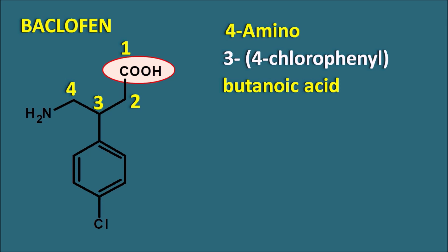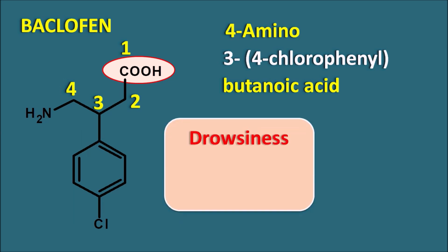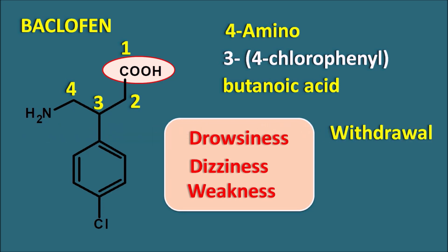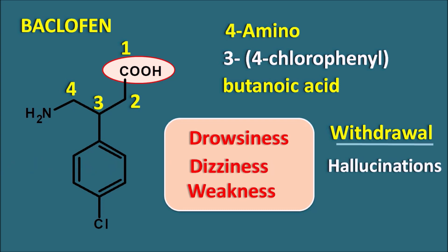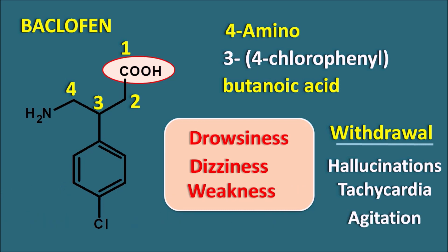Baclofen is used to treat spastic conditions and to control muscle pain in spinal cord injuries. Since it acts centrally, it produces central side effects like drowsiness, dizziness, and weakness. When this drug is withdrawn suddenly, it shows withdrawal effects — particularly psychotic symptoms like hallucinations — and it can also stimulate reflex mechanisms and the sympathetic system, producing tachycardia and agitation. Therefore, baclofen should not be stopped suddenly.